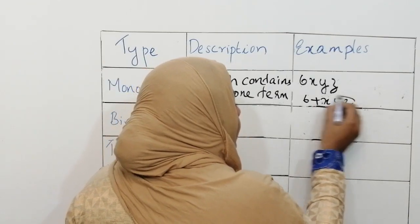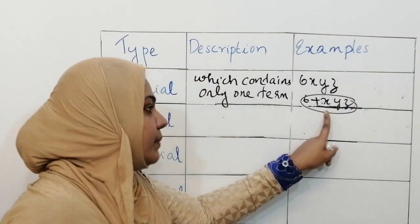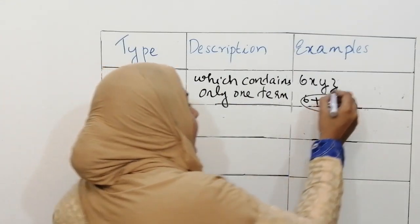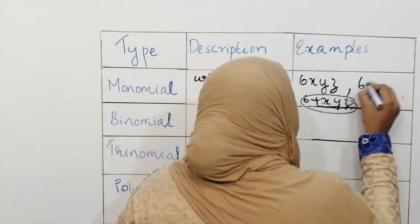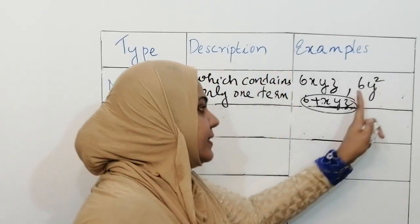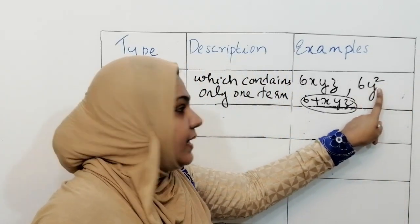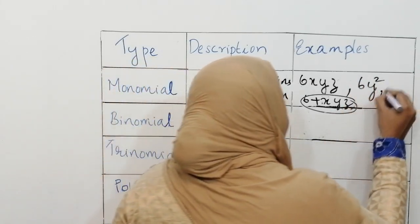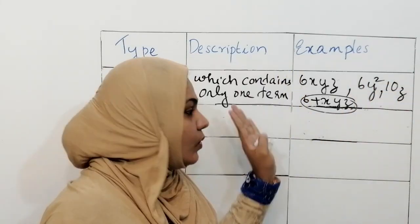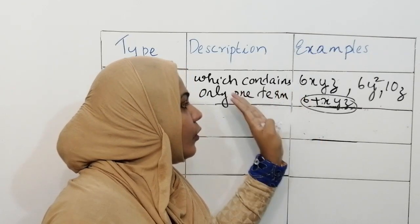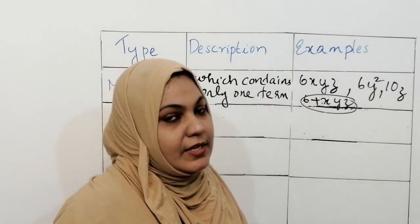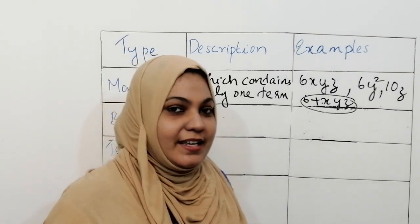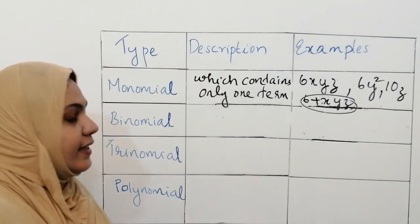From this you can understand that 6 plus xyz has two terms, so it falls under the category of binomial. Another example of monomial is 6y squared — here 6 is multiplied by the variable y squared, so it's a monomial. Similarly, 10z is also a monomial. All these expressions have a coefficient multiplied by a variable.